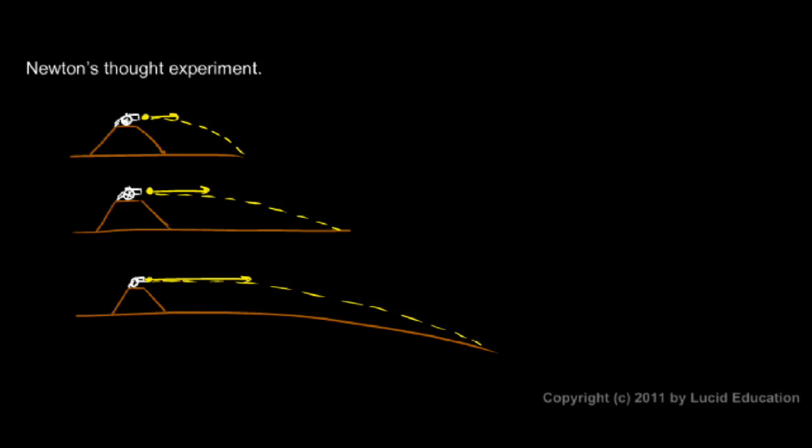If it has farther to fall, it will take longer to fall. So in this case, they don't hit the ground at the same time. Because it's moving so fast to the right, the curvature of the Earth's surface can no longer be neglected.